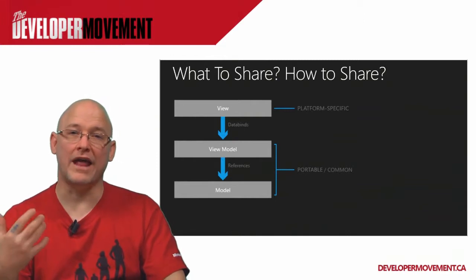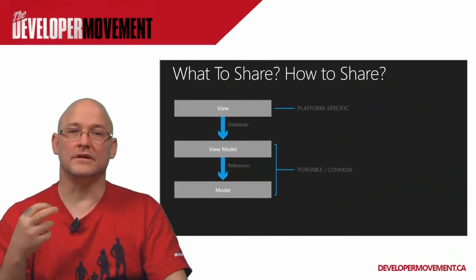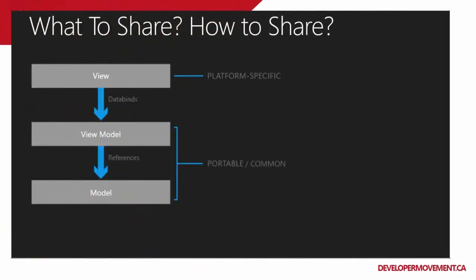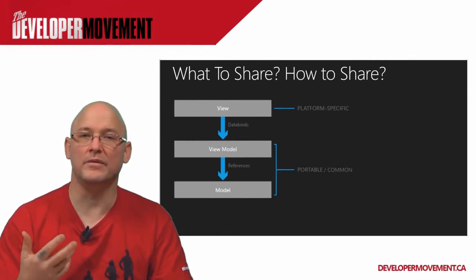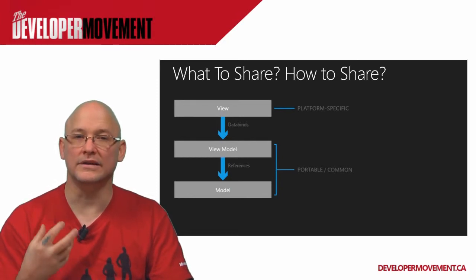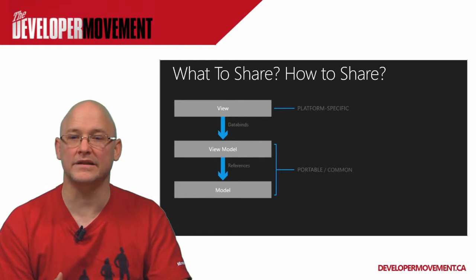To quickly recap on what to share and how: the view is platform-specific — that is the UI, the interaction between the user and the device, and it has to rely on what's best for that device and the best user experience. Through really simple data binding, you attach to your view model — the interactive layer between business logic and view logic — and your view elements, creating complete abstraction between the view and the model. Your view model and model should be completely common across different platforms, in this case Windows Phone and Windows 8.